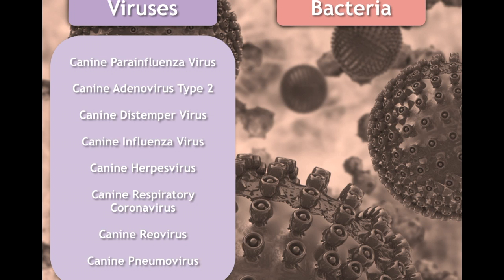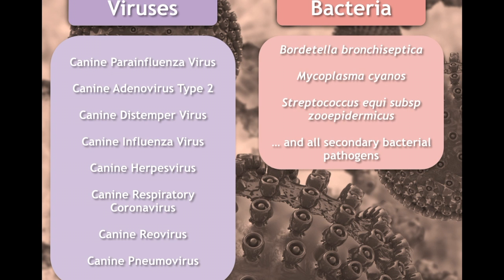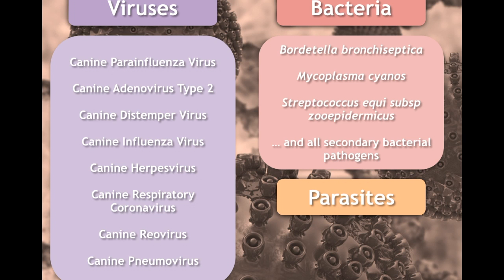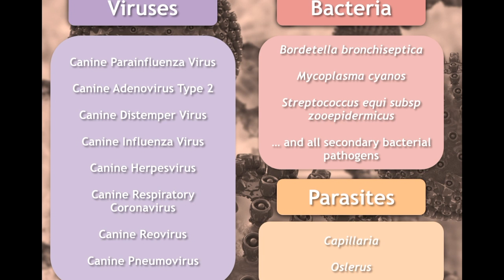There are also bacteria that can cause kennel cough, and the list is long here. The most important one that everybody knows is Bordetella bronchiseptica — the most common bacterial cause of kennel cough worldwide. But there are other bacteria that can cause kennel cough as well. And if you work in or are involved in a kennel, you need to know that parasites can also cause kennel cough. It's not common, but sometimes parasites like Capillaria or Oslerus — which live in the airways — can create kennel cough-like symptoms.